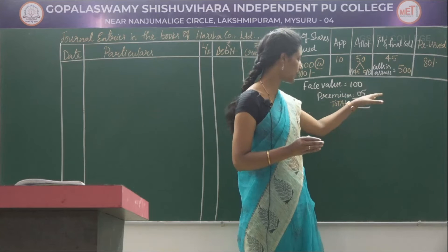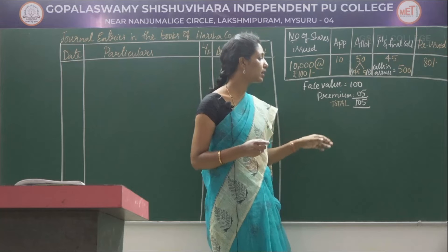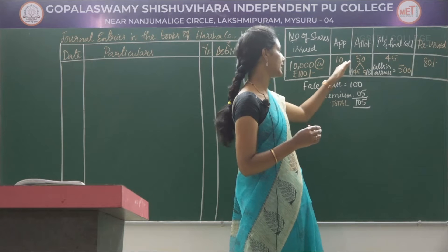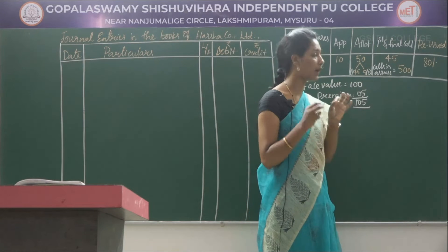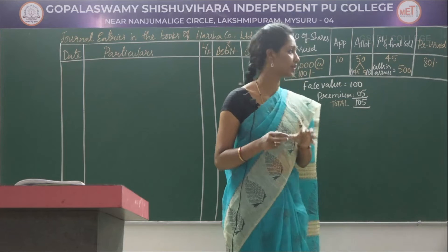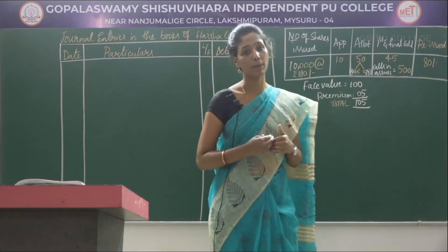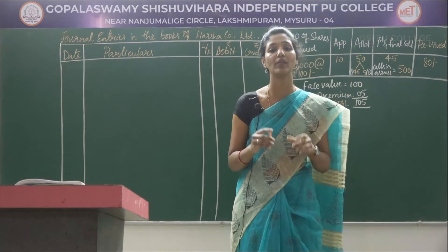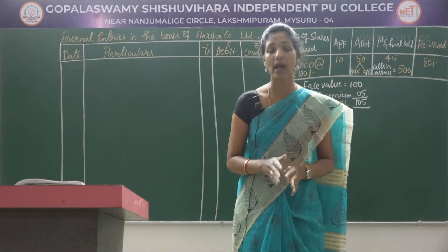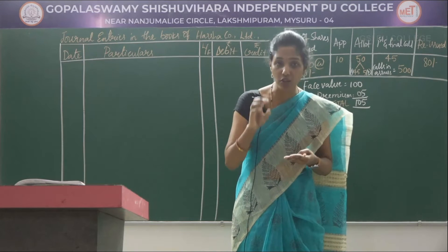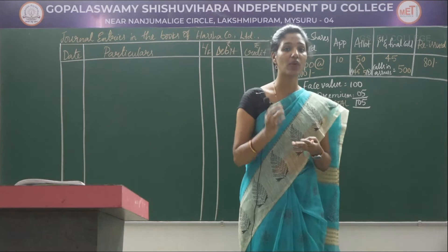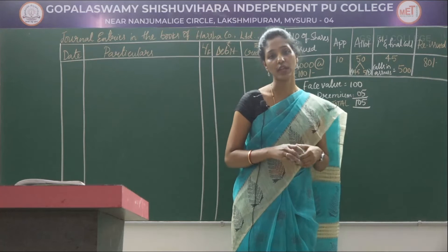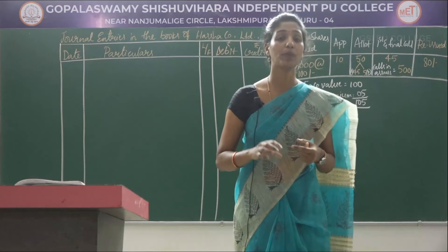Rs 100 plus Rs 5 premium — the total value of the shares is Rs 105. The company will receive this Rs 105 from the public in three stages: Rs 10 on application, Rs 50 on allotment, and Rs 45 on first and final call. At the first and final call stage, one shareholder may fail to pay Rs 45 on 500 shares, and this will be called as calls in arrears. Such 500 shares will then be re-issued to the public at Rs 80 per share.